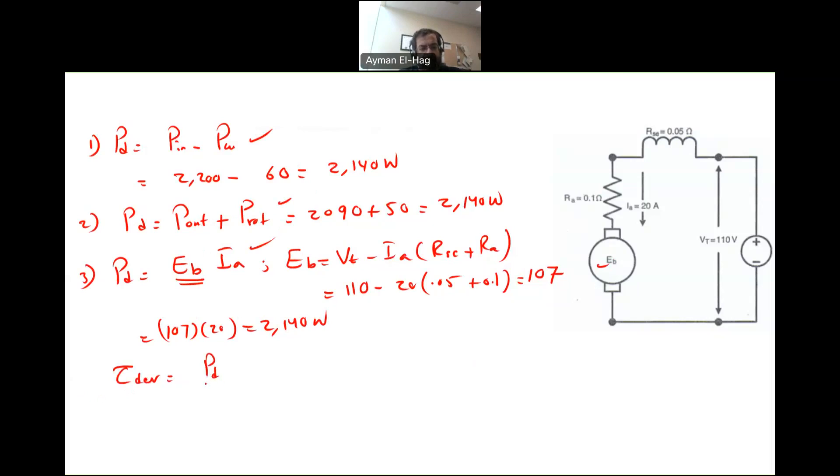So now the torque developed would equal to the P developed divided by omega, which is 2140 divided by omega, which is 2 pi over 60 times the speed, which is 800, and this will give me 25.54 newton meters.